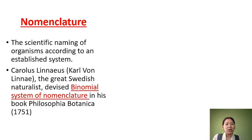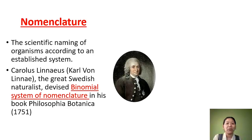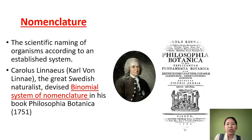Carolus Linnaeus, a Swedish naturalist, devised the binomial system of nomenclature in his book Philosophia Botanica in 1751. In this book he explained the binomial system of nomenclature.